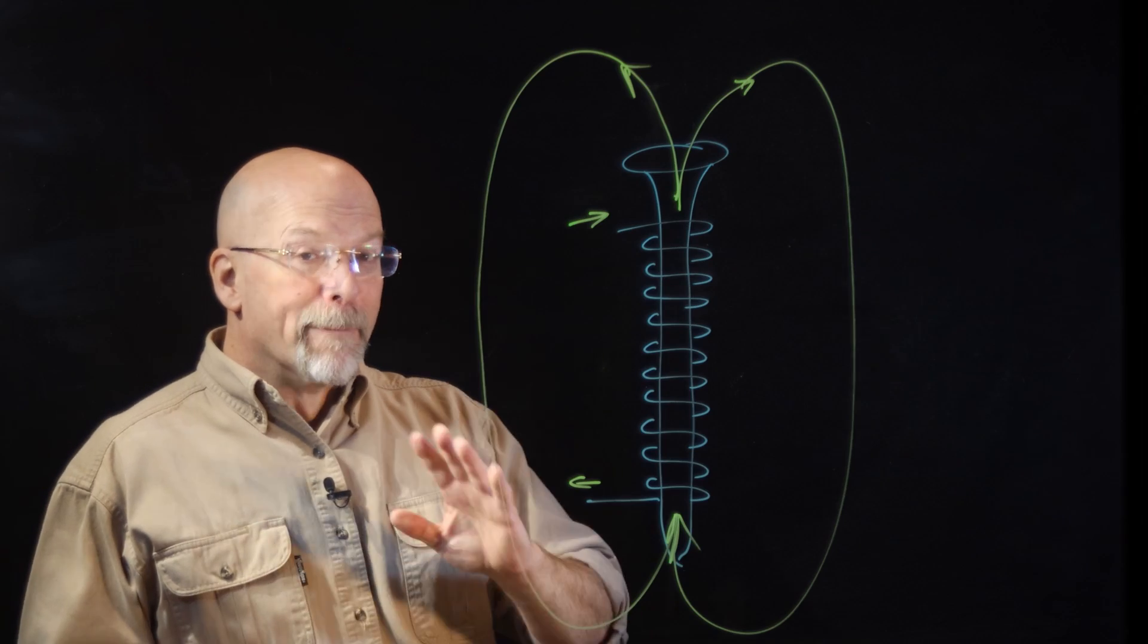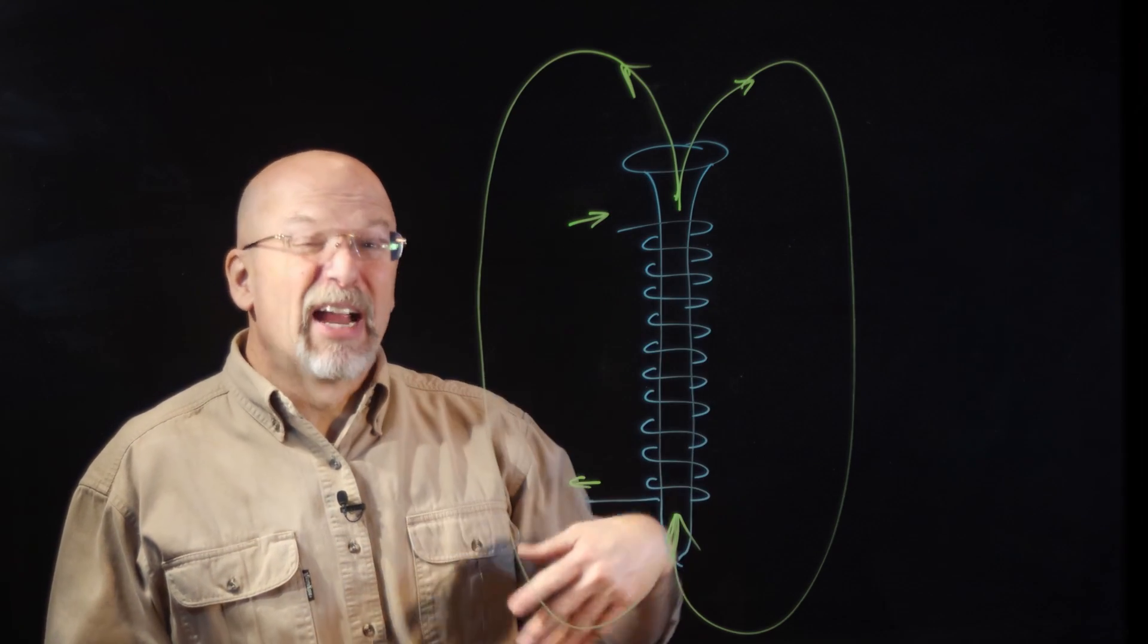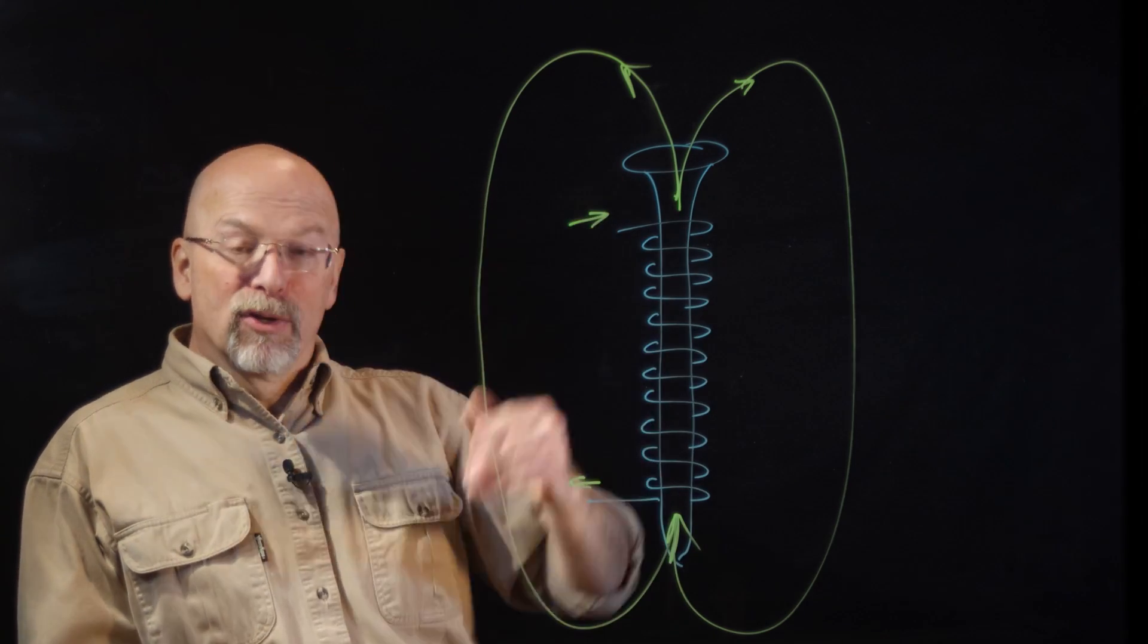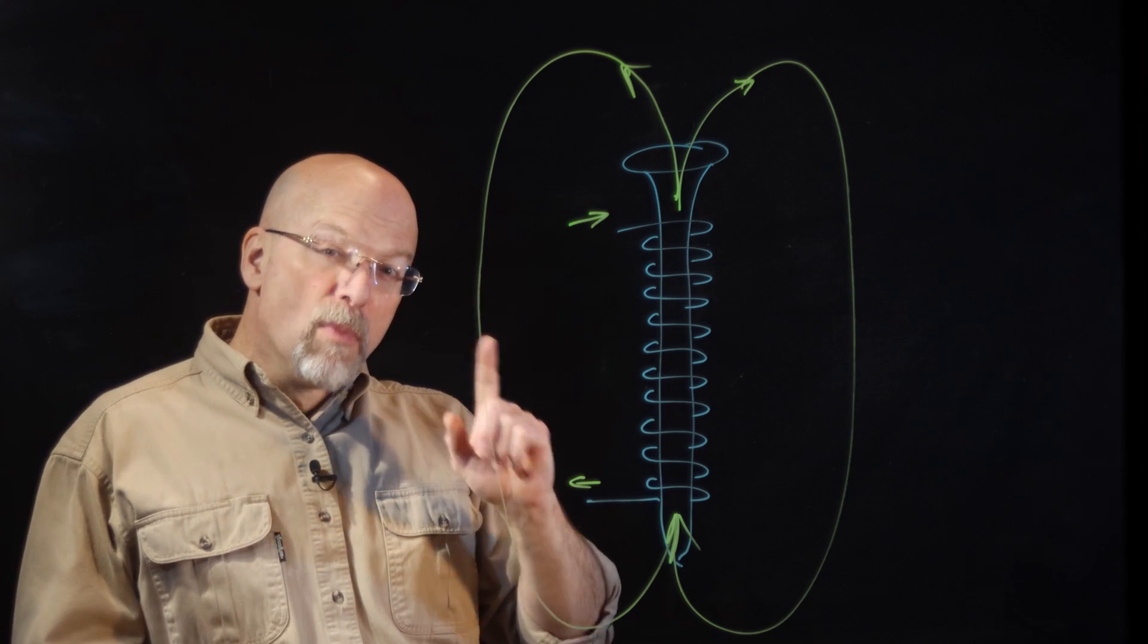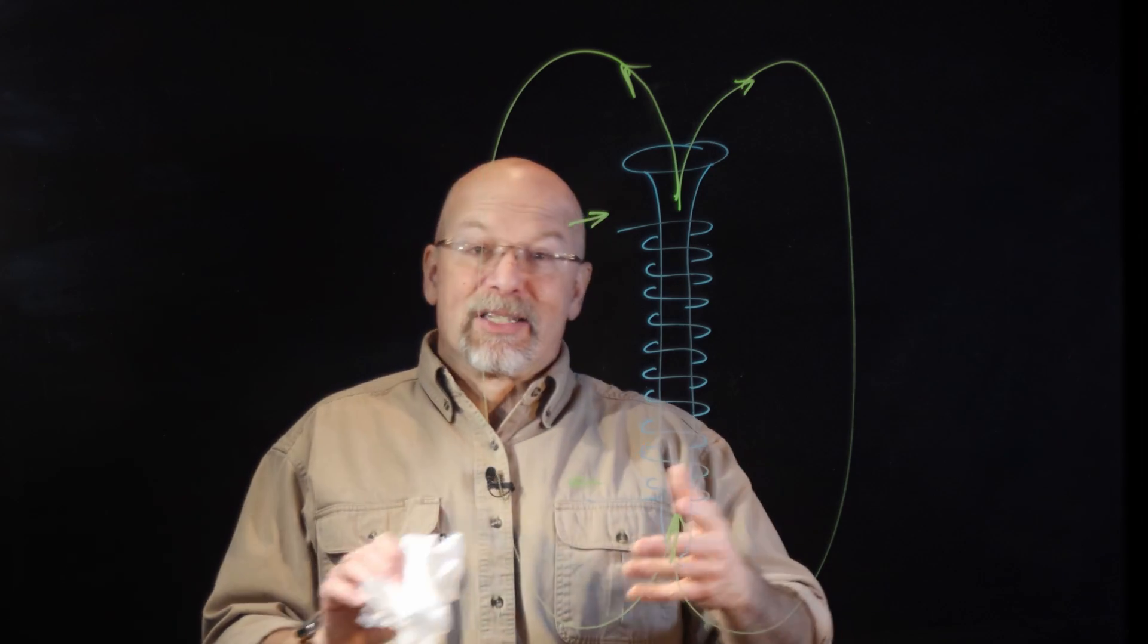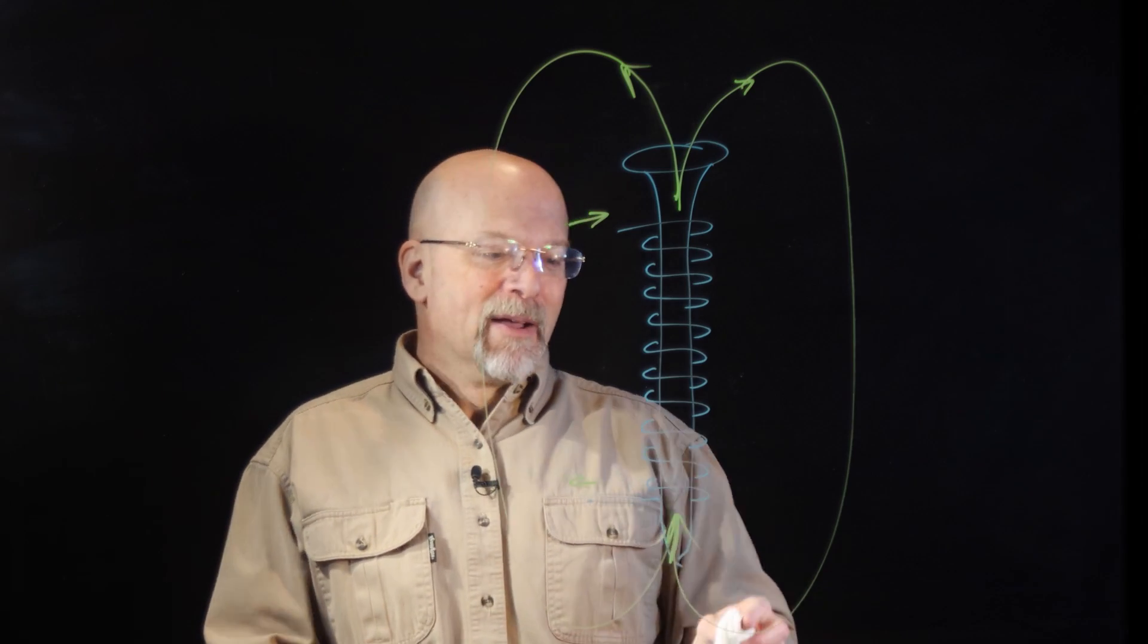Electromagnetic fields much prefer flowing through an iron-based material than they do flowing through air. So what would make this even more efficient, make this magnet more efficient, so to speak, is to...